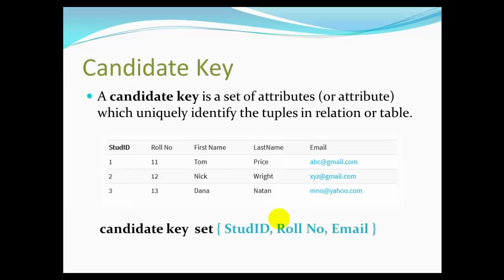The key in a database management system is the set of attributes which uniquely identify the tuples in a relation or table. The candidate key is the set of attributes that can uniquely identify a row. For example, in a student table: student id, first name, last name, email — student id can uniquely identify a record.